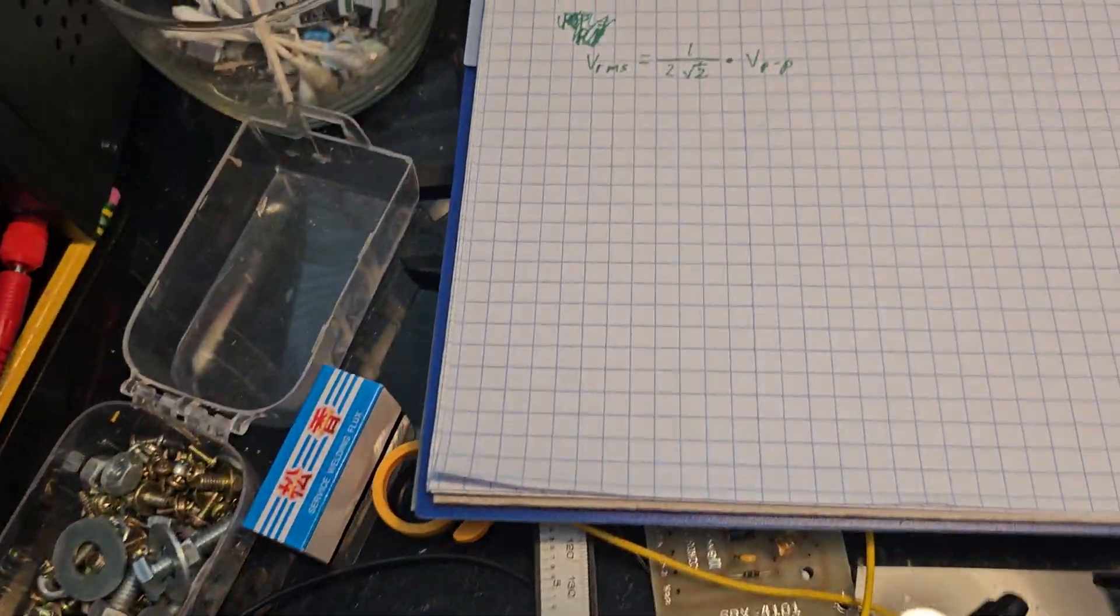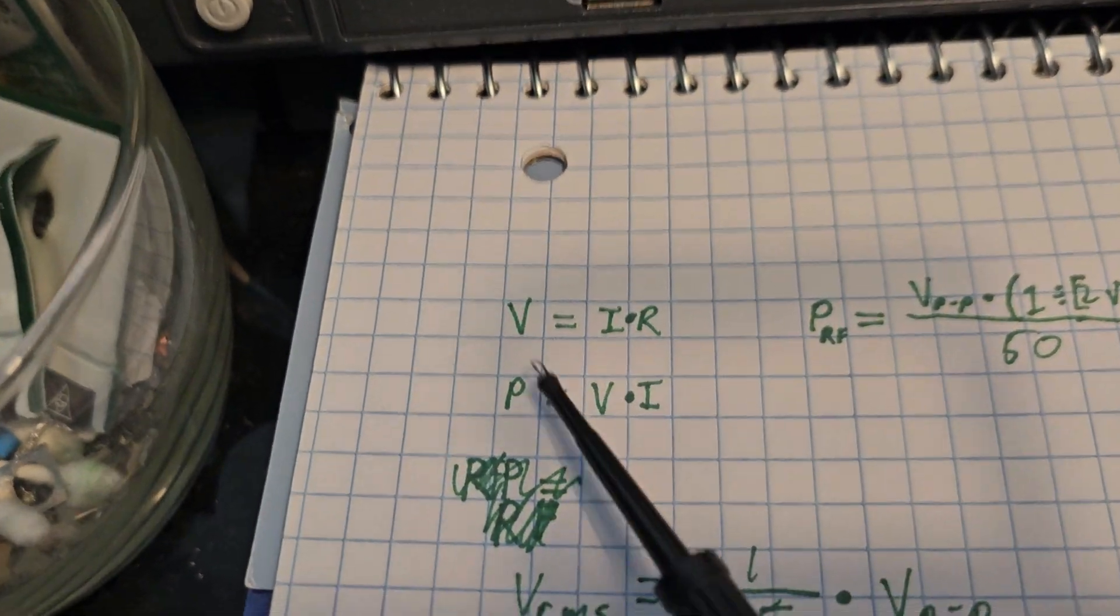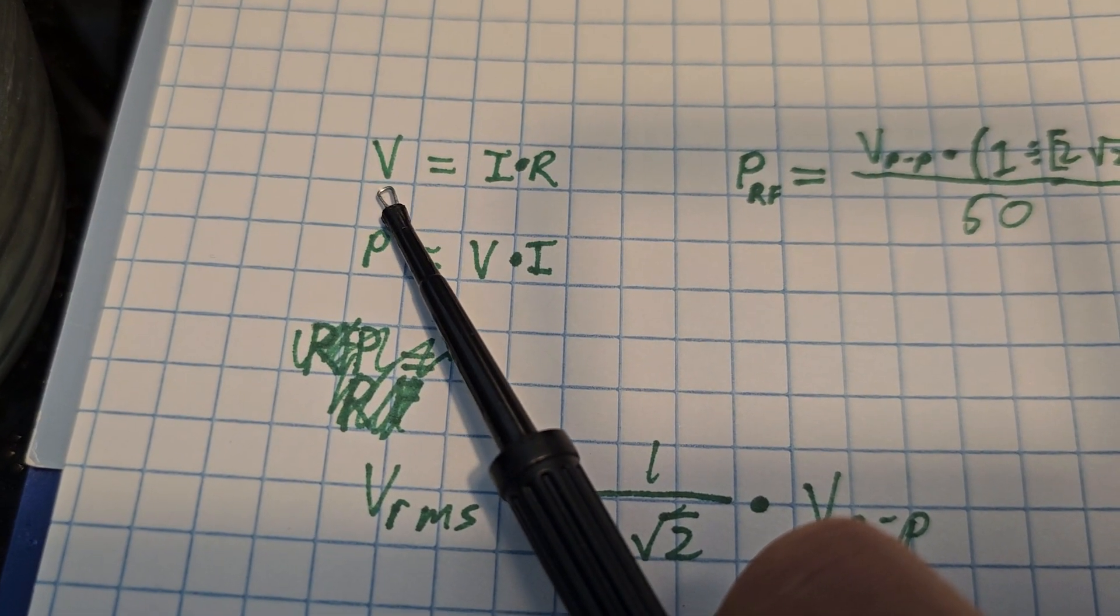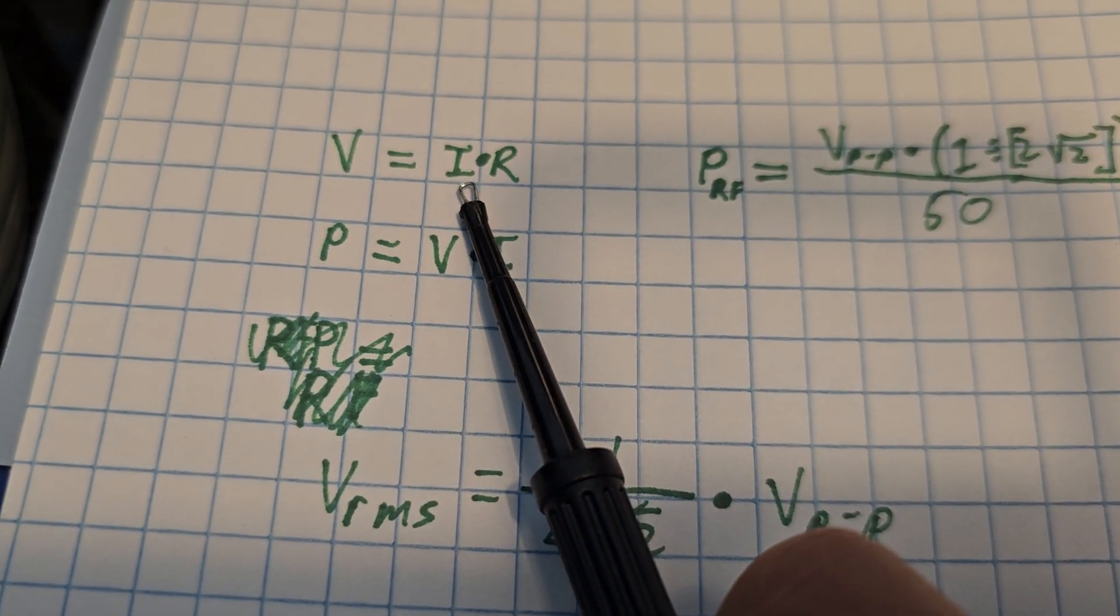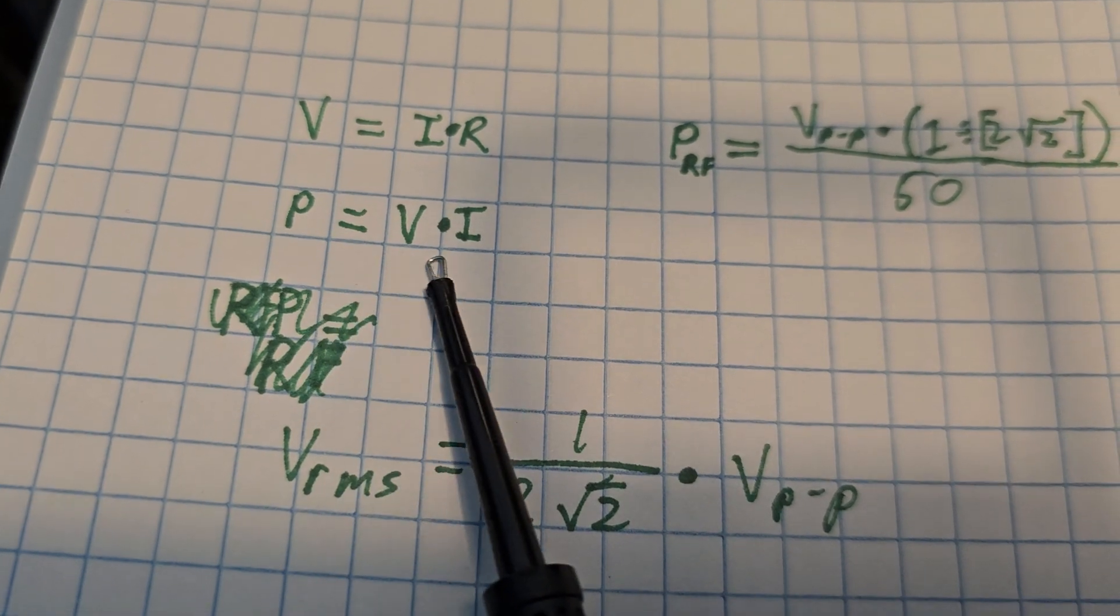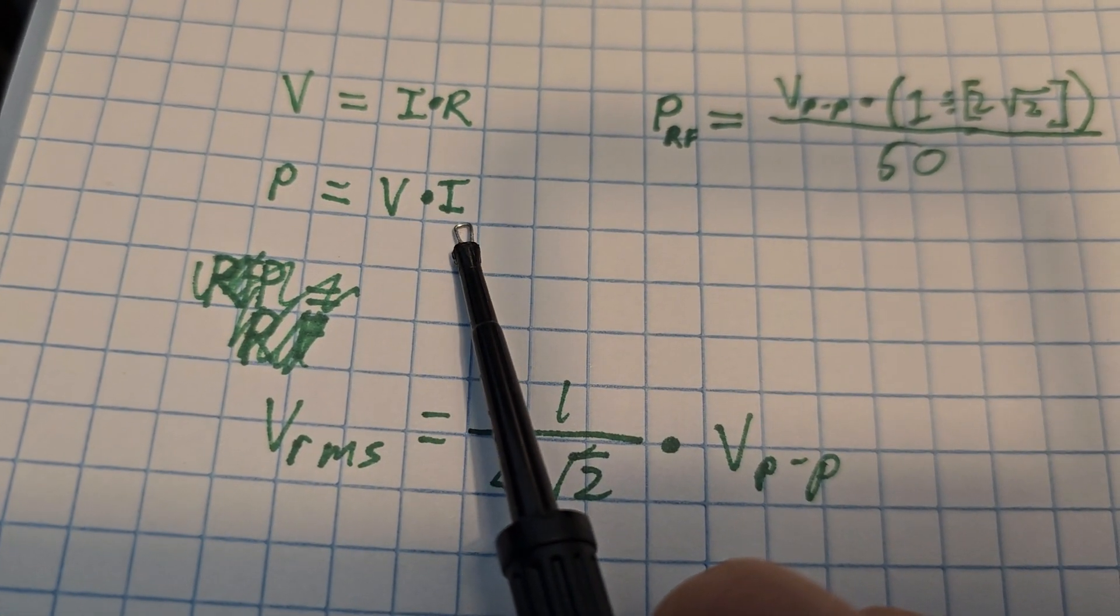So let's look at our equations for this. Here we have voltage peak, here we have Ohm's law - voltage equals current times resistance. Here we have the equation for finding power - power equals voltage times current.